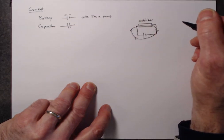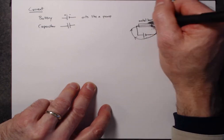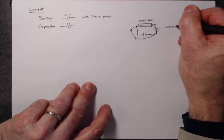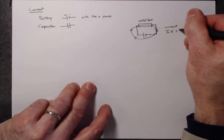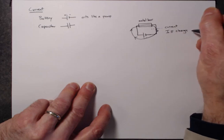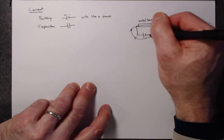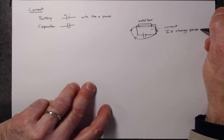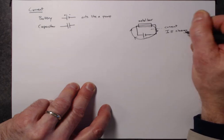And so if I imagine watching the charges go past a particular point, the current, and we use the symbol I, is defined to be the charge passing a particular point like this point in our circuit. So these are wires connecting to the bar, so we're sort of looking into a wire and counting the charge that passes by. The charge passing a point per second.